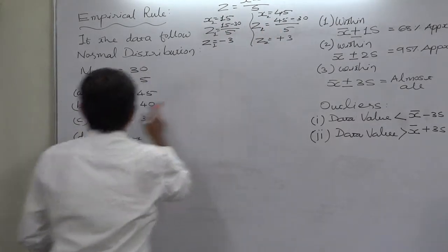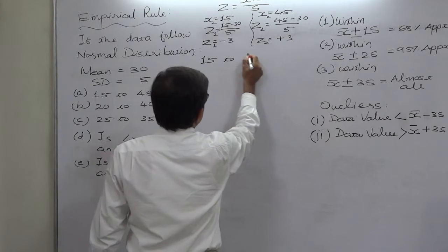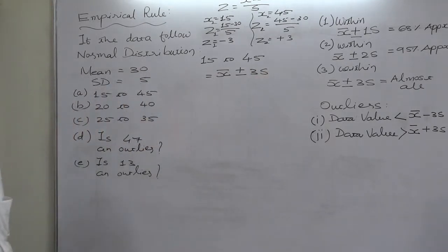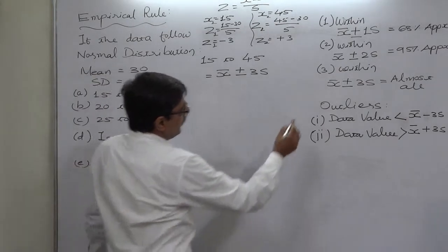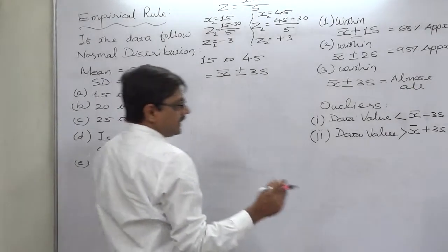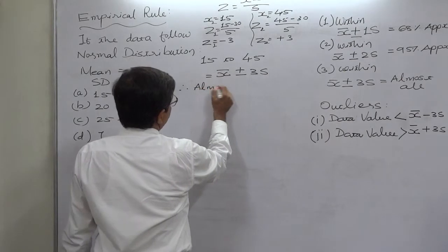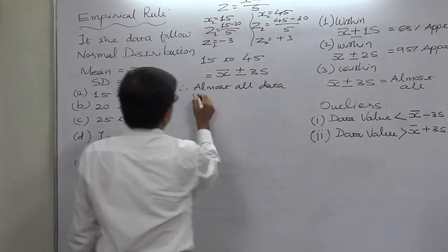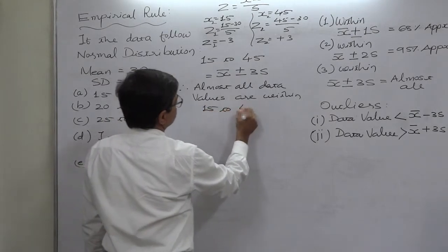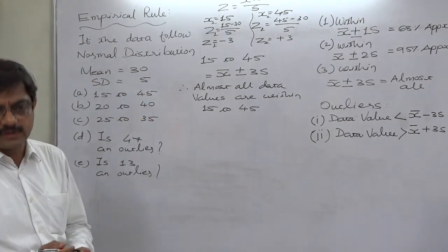That means the range 15 to 45 corresponds to mean ± 3 standard deviations. According to the empirical rule, approximately 99.74% — almost all data values — are within the range 15 to 45, though not literally all.